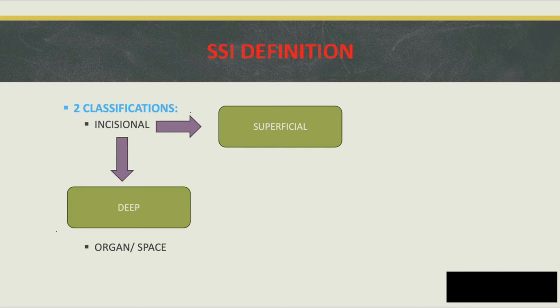There are two classifications: incisional — superficial or deeper — and organ/space. The deeper ones involve the organs. For example, mediastinitis after a CABG would be defined as a deep surgical site infection.